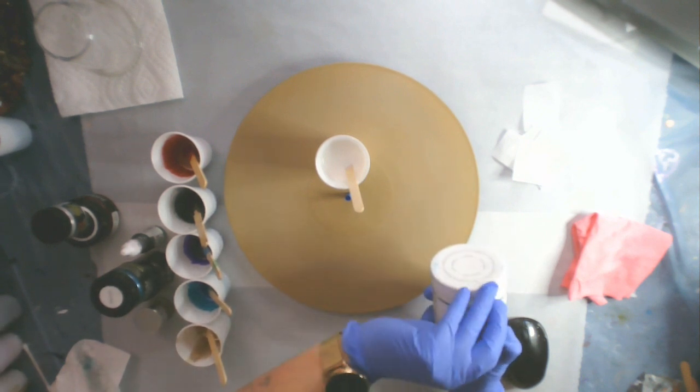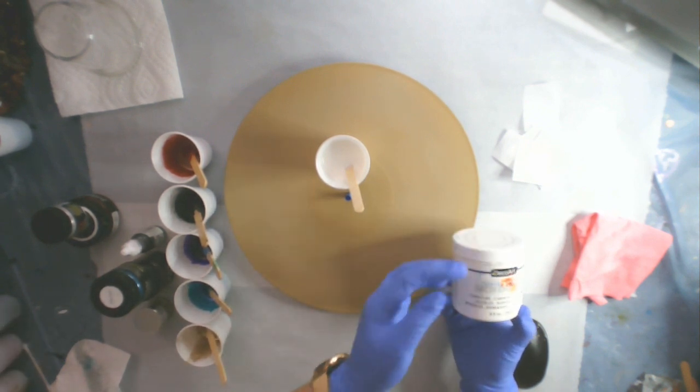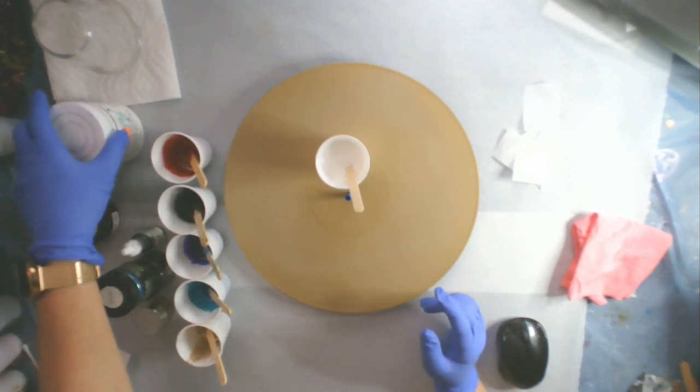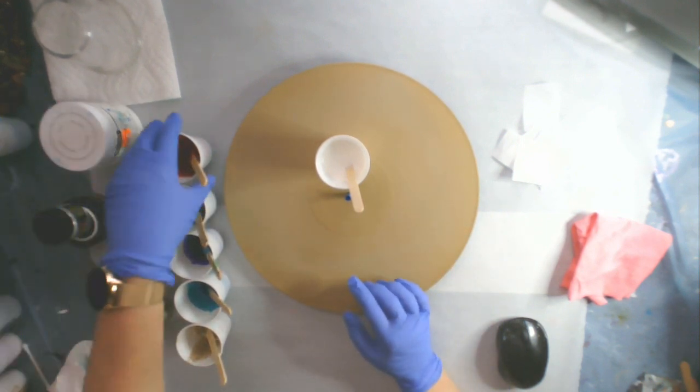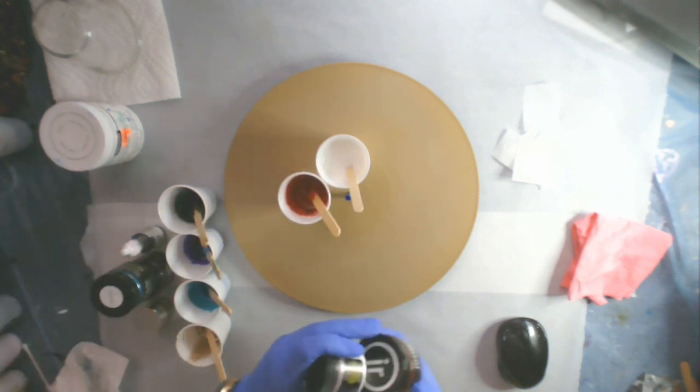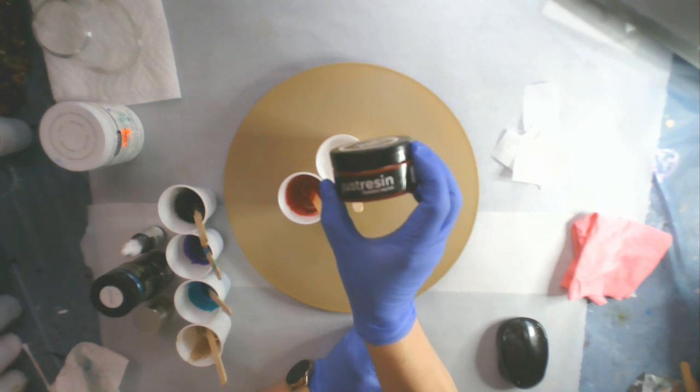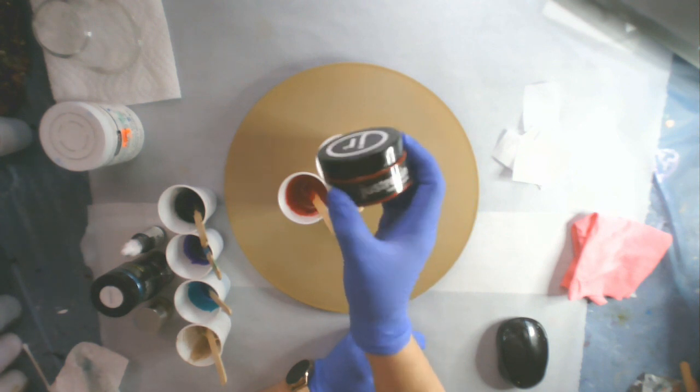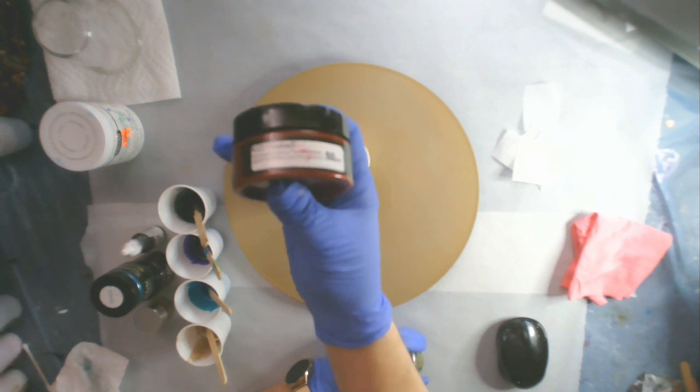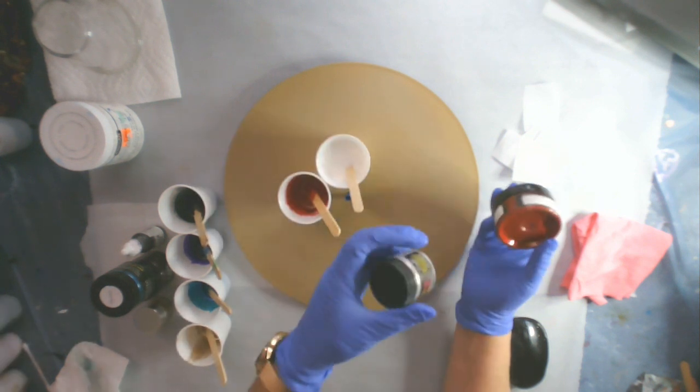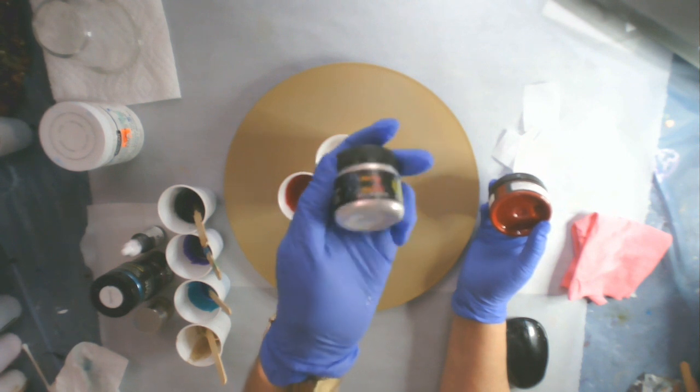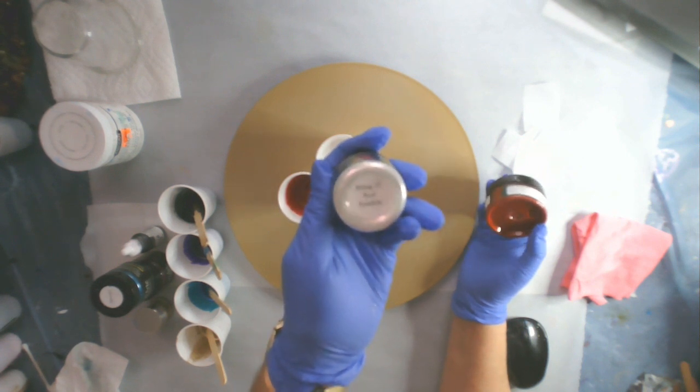So the colors I'm using is Deco Art Satin Enamel White. And that will be the base coat over the gold. And I'm going to use this Just Resin ATD Fireball Red. And I have mixed in with the Fireball Red some of this Primary Elements Bling It Red Sparkle.